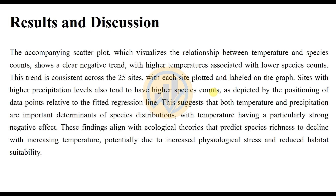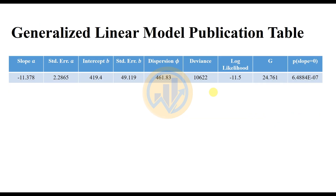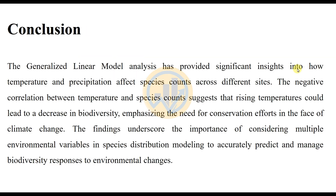For the publication table format of the Generalized Linear Model, the table includes two rows and columns for slope with standard error, intercept with standard error, dispersion, deviance, log-likelihood, G-test value, and significance value.